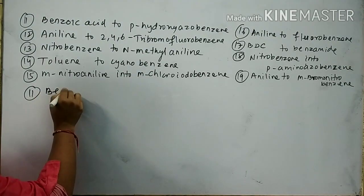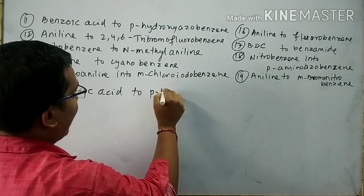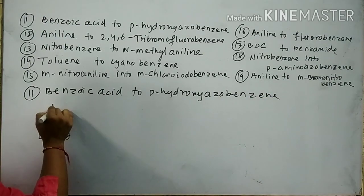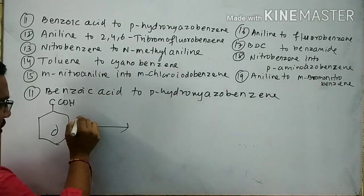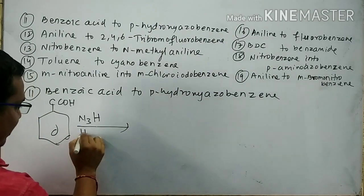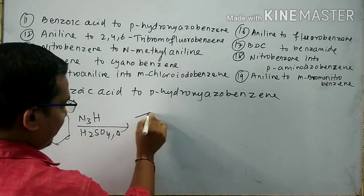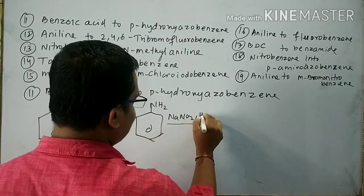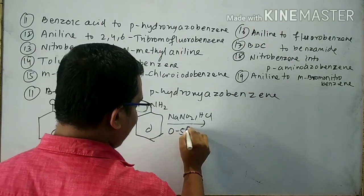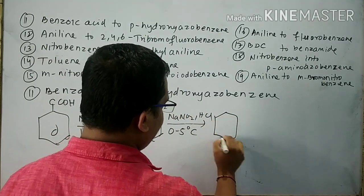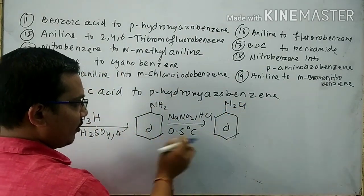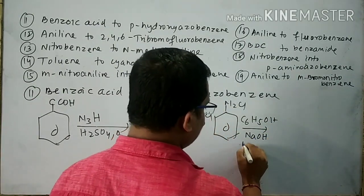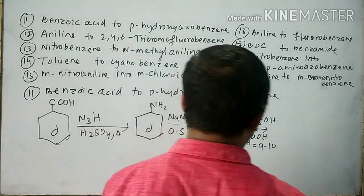Question number 11: Convert benzoic acid to para-hydroxy azobenzene. Benzoic acid is subjected to reaction with hydrazoic acid and H2SO4, then benzoic acid is converted into aniline. Aniline reacts with NaNO2 and HCl at ice-cold temperature, 0 to 5 degrees centigrade, to form BDC. BDC is subjected to reaction with phenol at basic medium (NaOH, pH 9 to 10), and para-hydroxy azobenzene is formed.